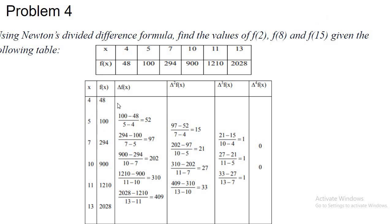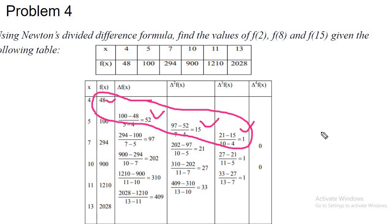How to find the operator? We have x values 4, 5, 7, 10, 11, and 13. First, get the first-order divided differences: for example, 100 minus 48 divided by 5 minus 4. Then get the second-order divided differences: 97 minus 52 divided by 7 minus 4. Then the third order: 21 minus 15 divided by 10 minus 4. At a certain point the coefficient becomes 0. So you take the relevant coefficients — 48, 52, 15, and 1 — to write the polynomial and predict the function at those values.